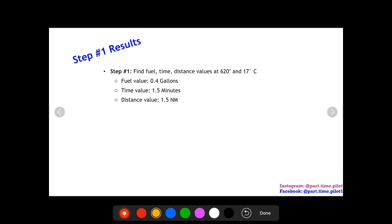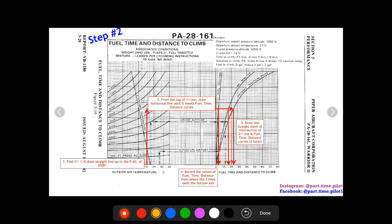So what we get from here, if you can zoom in, that's why I like to do it on the computer—I can zoom in and I can really get a little bit more accurate—but we get a fuel value of 0.4 gallons, time value of 1.5 minutes, and a distance value of 1.5 nautical miles. So now we move on to step two. Now we do the same exact thing but we do it at our cruise temperature and our cruise altitude.